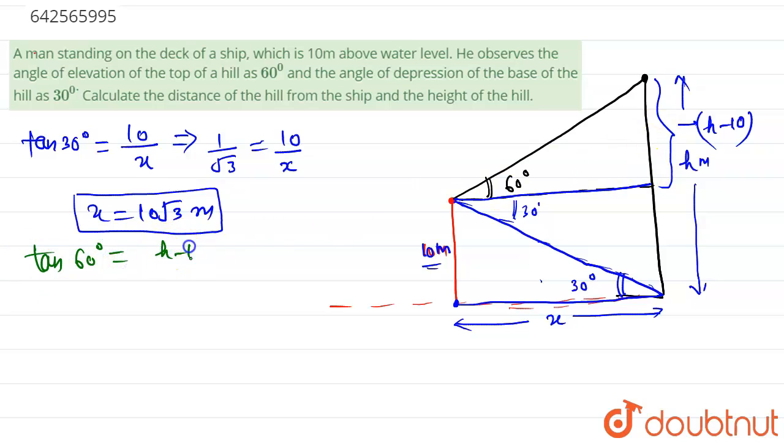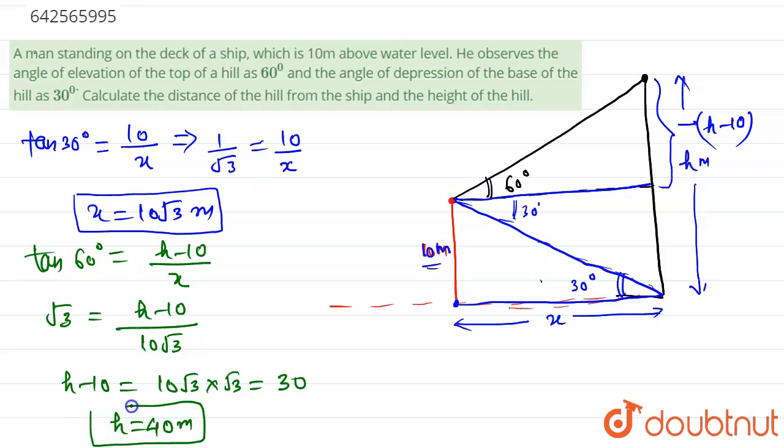perpendicular, that is h minus 10, upon base, that is x. Tan 60 is root 3, which is equal to h minus 10. We have found the value of x, that is 10 root 3, so putting that in: h minus 10 is equal to 10 root 3 into root 3, that is 30. So h is equal to 40 meters.